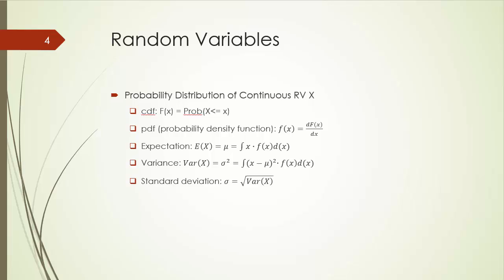Intuitively, a continuous random variable can take on infinitely many values, so the probability that the random variable takes on a specific value is essentially zero. Technically speaking, the probability measure is zero. As a result, for a continuous random variable, PMF does not make much practical sense. Instead, we define probability density function, PDF, which represents the rate of change in probability at a given value.